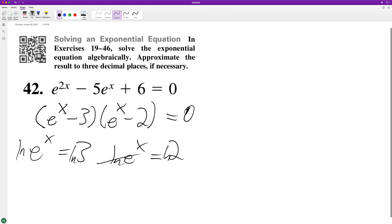What taking natural log does is it gets rid of the e and just brings down the x, and we get x equals natural log of 3 and x equals natural log of 2.